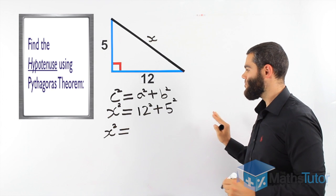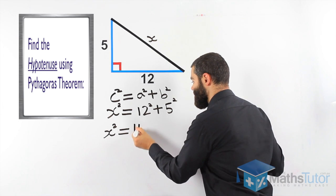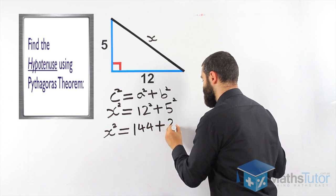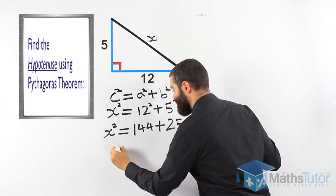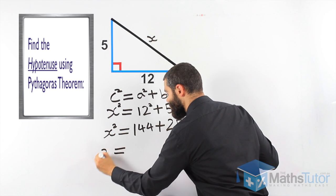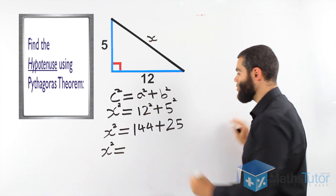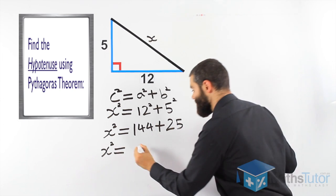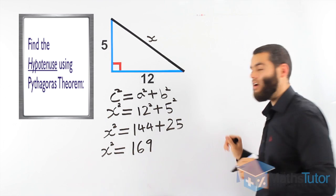X squared. Now, 12 squared plus 5 squared. 12 squared, 144. And 5 squared is 25. Now we add them together. The hypotenuse squared equals the two short sides squared and add it together. 144 plus 25, 169. So X squared is 169.